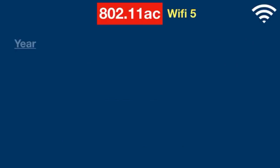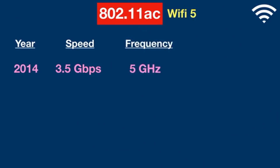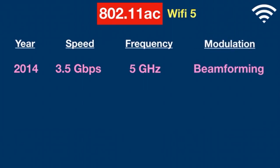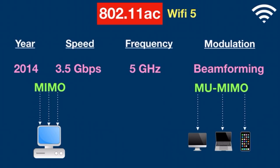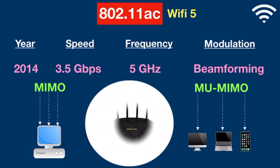802.11ac was initially released in 2014. It significantly increased the data throughput for Wi-Fi devices up to a maximum of 3.5 Gbps. It added additional Wi-Fi broadcast channels for the 5 GHz frequency band and supported far more antennas on a single router. It used more advanced beamforming technology for directing signals toward a specific receiving device. A significant advancement with 802.11ac was multi-user MIMO. While standard MIMO directs multiple streams to a single client, multi-user MIMO can direct multiple streams to multiple devices simultaneously. While multi-user MIMO doesn't increase the speed of any single client, it can increase the overall data throughput of the entire network. Most home wireless routers are compliant with this standard.